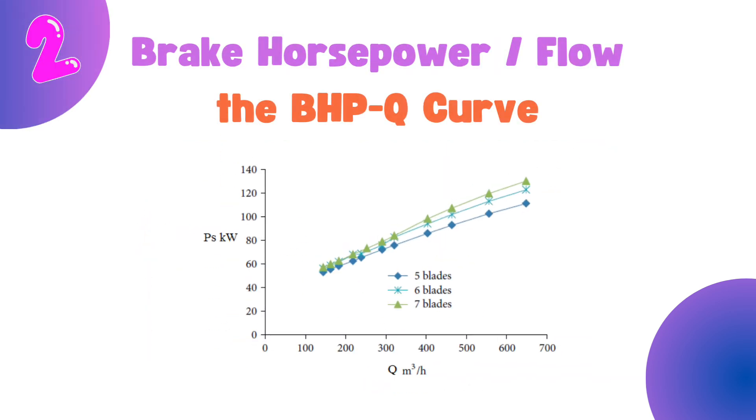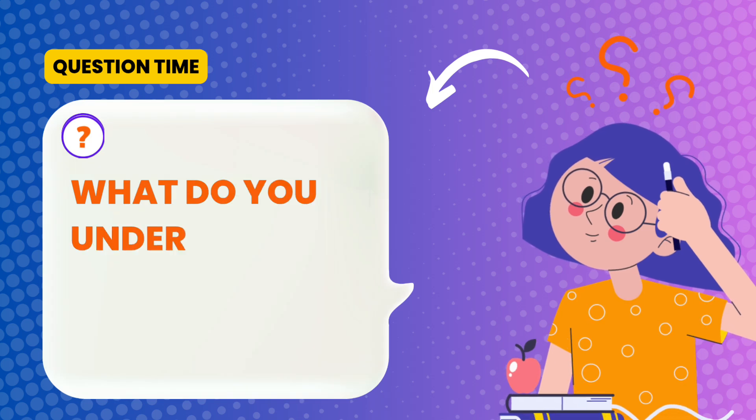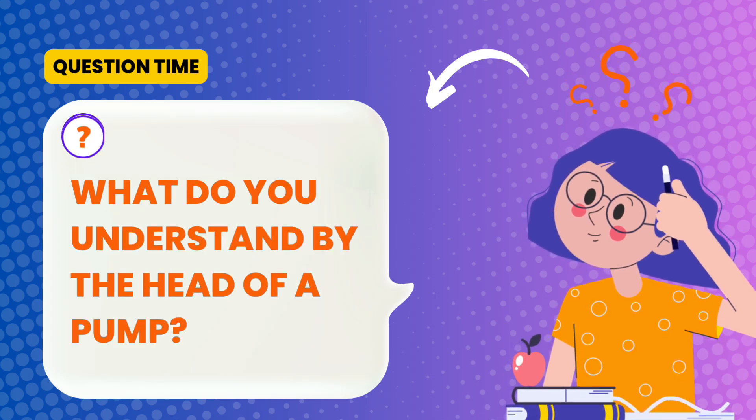Second, brake horsepower vs. flow rate, the BHPQ curve. This shows the power required to operate the pump. As flow increases, the power required also increases. This helps us size the motor properly. And here's a question for you all. What do you understand by the head of a pump?